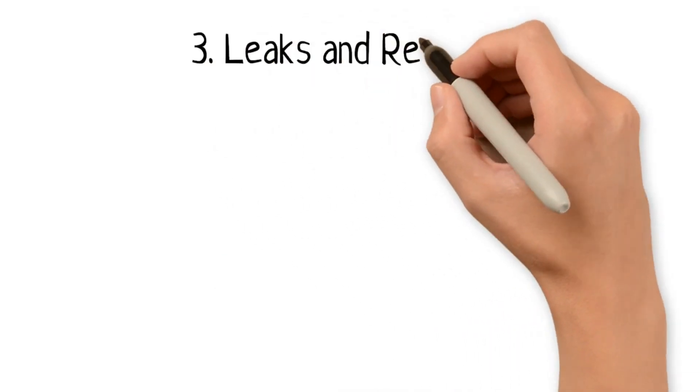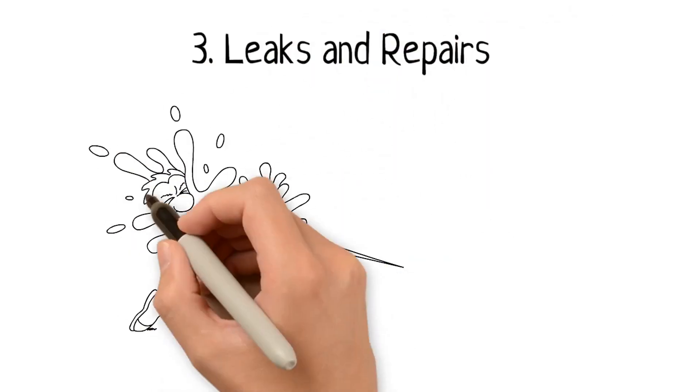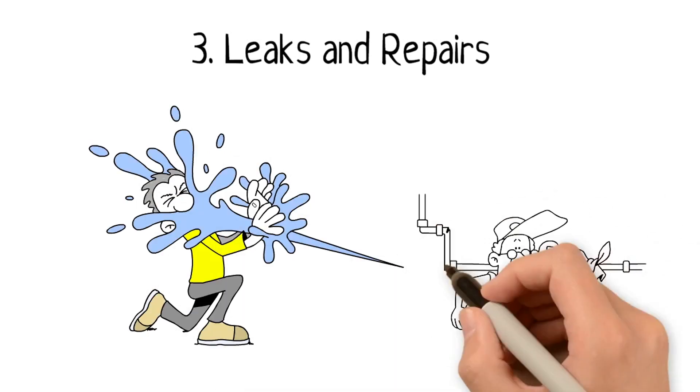3. Leaks and repairs. Small, visible problems can become large mental objections and change how someone feels about your house. Fix them beforehand.